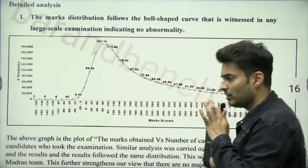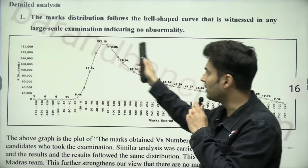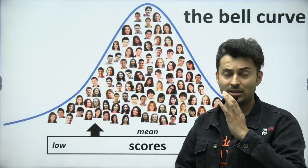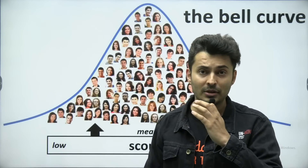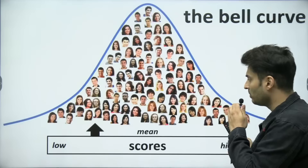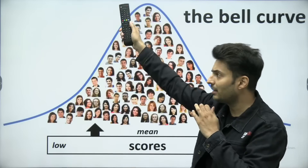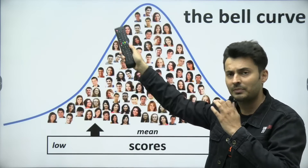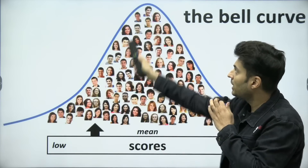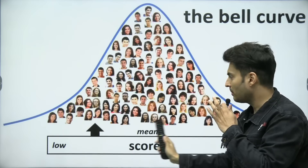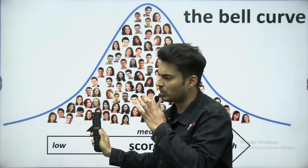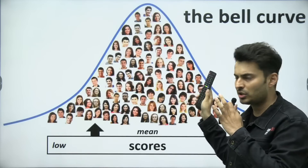This was a graph given by IIT Madras — a bell curve, which is basically a standard distribution curve. You might have also seen it in chemistry and physics, especially in the kinetic theory of gases chapter. Basically, if on the horizontal line you plot the marks and on the vertical line you plot the number of students, the graph looks in the shape of a bell. There will be a majority of students at some mean score, very few scoring very high, and very few scoring abnormally low. This is usually how it should be.